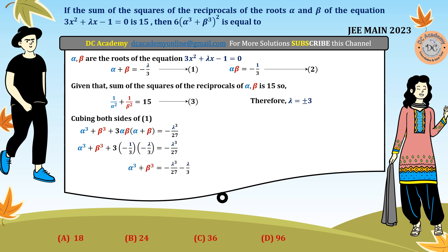So α³ + β³ = −λ³/27 − (−λ/3 terms), and after calculation we obtain α³ + β³ in simplified form. We then square both sides to get (α³ + β³)² = (λ/27)² · (some expression), which simplifies to λ²/9 whole squared.